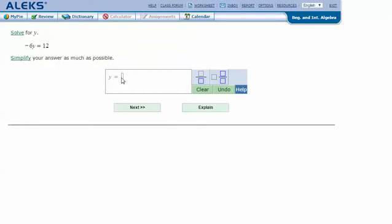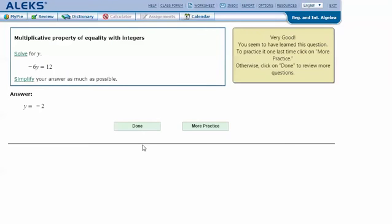In my AlexPi screen, type in the answer that I got in my notes, negative 2, and click next. And it says that I got the correct answer. Thanks for watching.